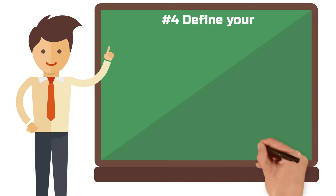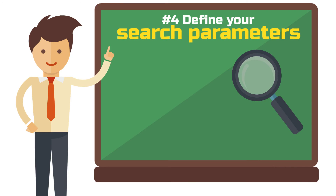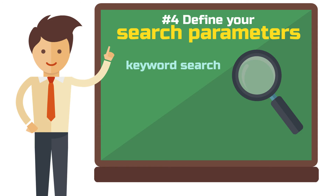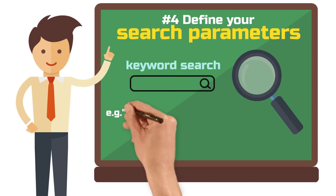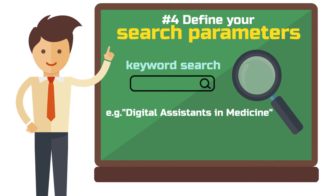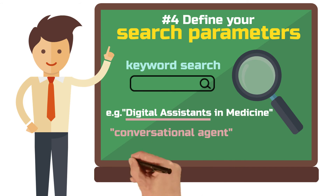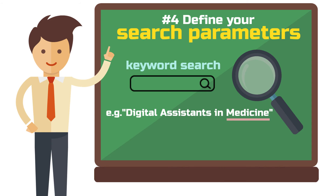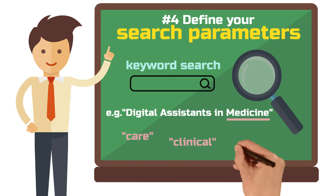Step 4: Define your search parameters. Now we are already in the search process. Typically you start with a keyword search, meaning you identify your keywords and several combinations of them. You should choose these in such a way that the search spits out the research you actually want. For example, if you want to write a review on digital assistance in medicine, you would need different variants of 'digital assistant' such as 'conversational agent', 'virtual assistant', or comparable terms. Depending on the focus, you would then combine this term with 'care', 'clinical', or 'medical'.